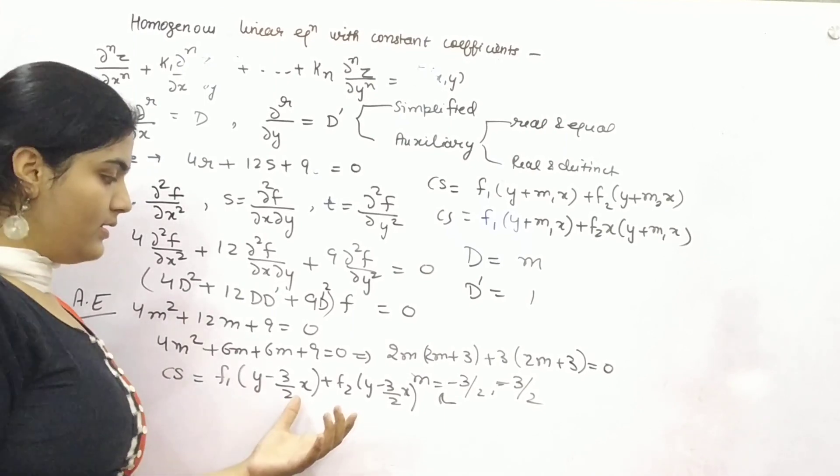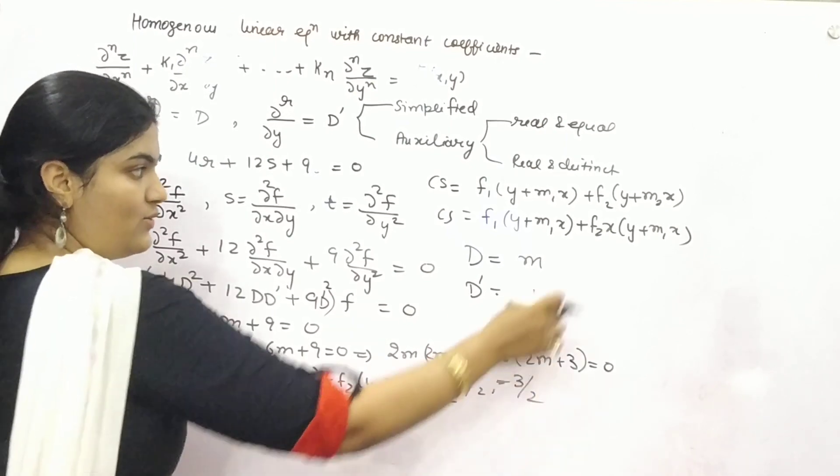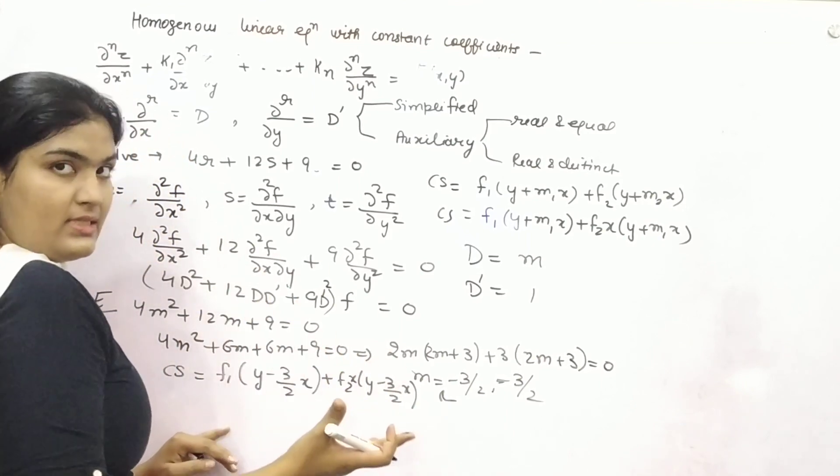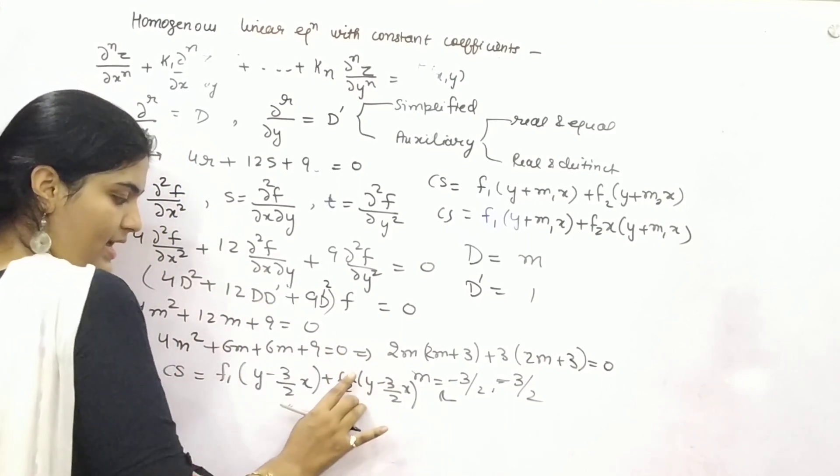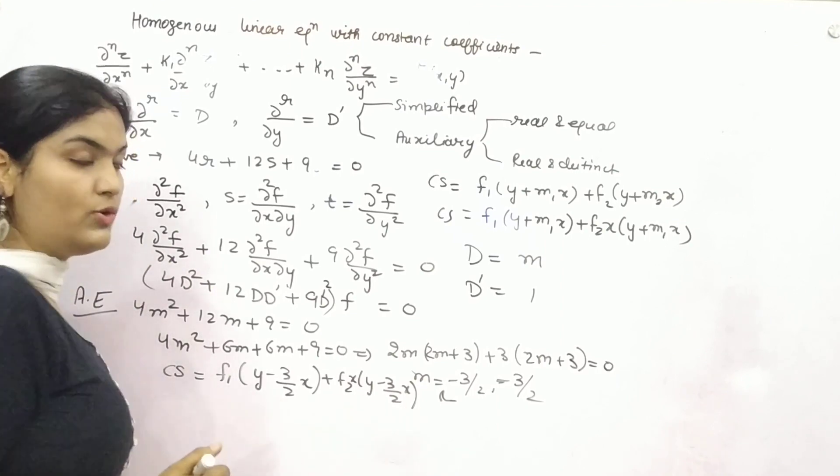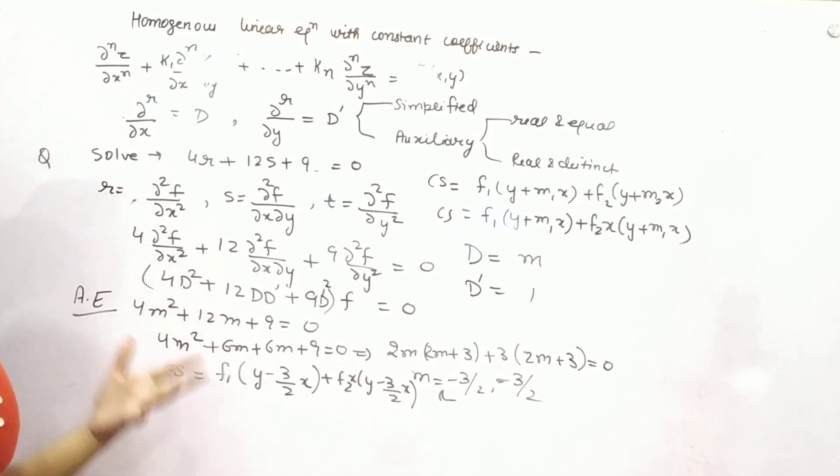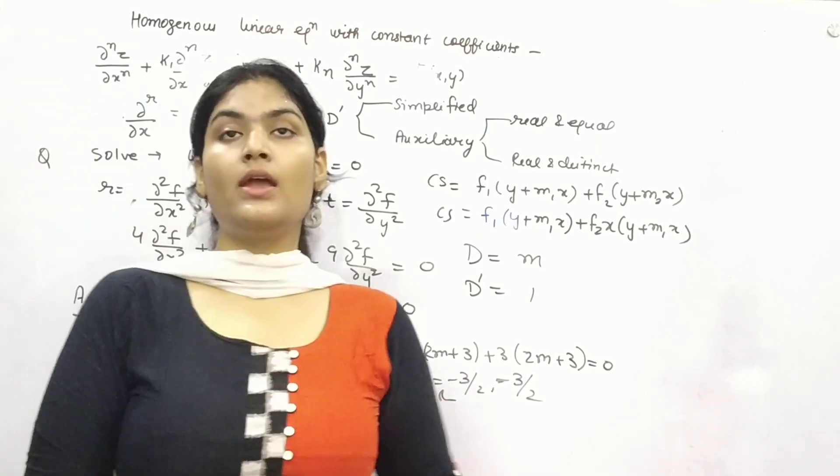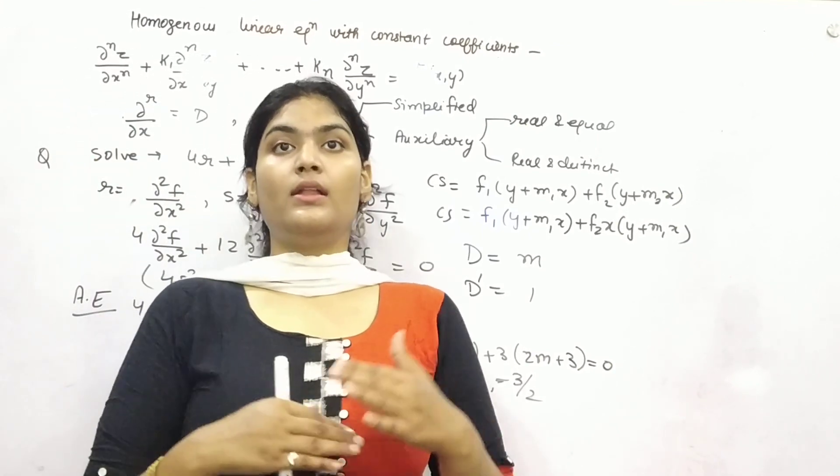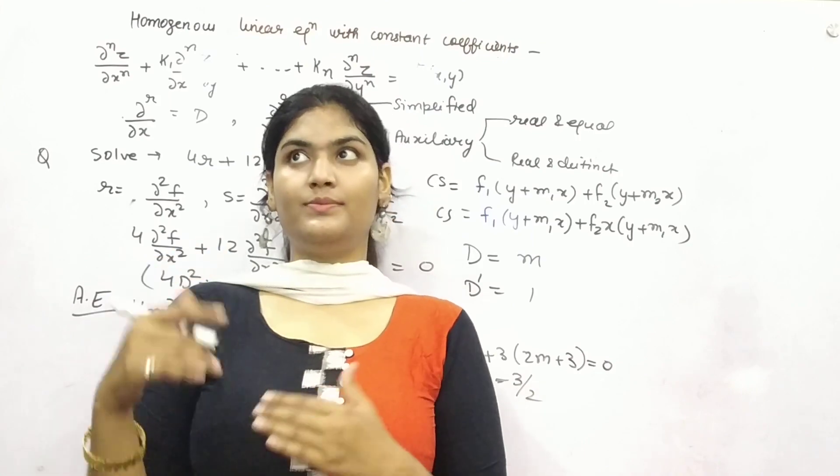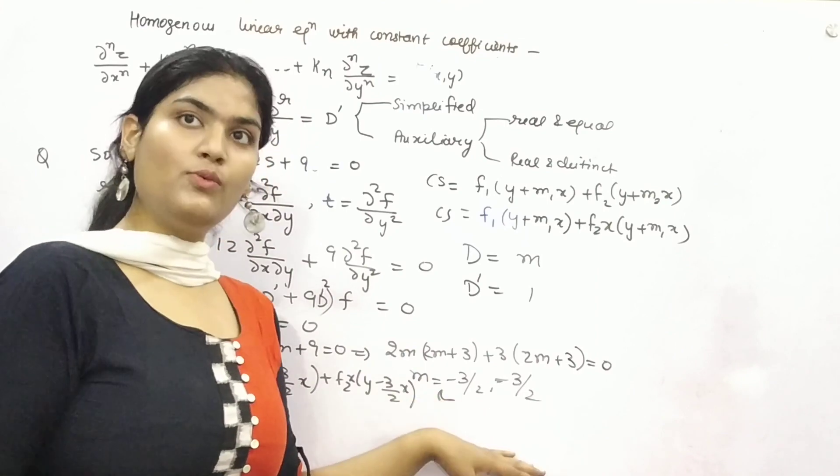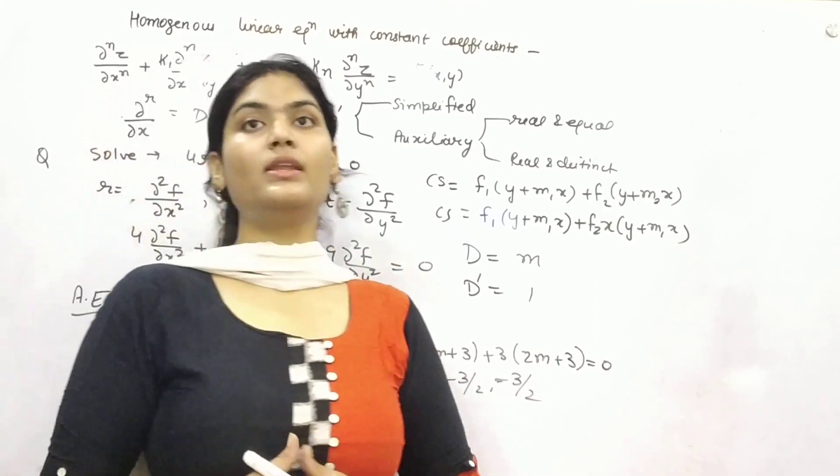Because it is equal roots, you need to put x as well. If it would be distinct, then you don't need to put x, only type two different solutions. I hope you understand. This was the simplest example. We will take it further to different difficulty levels. For now, this is enough. You can do some more questions based on it.